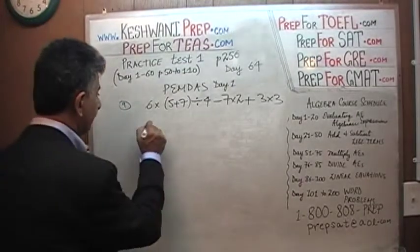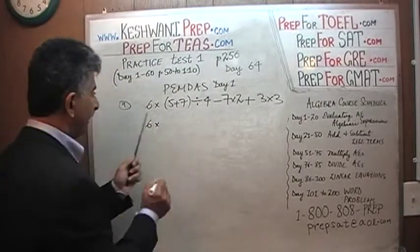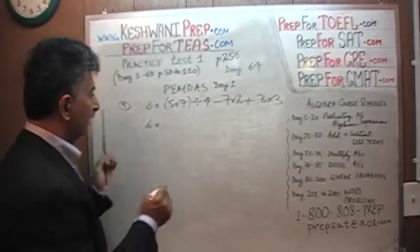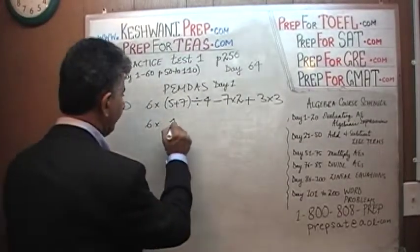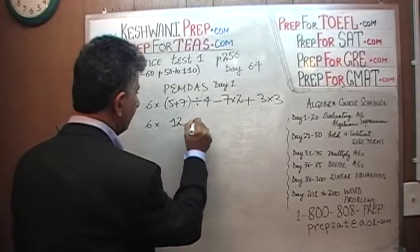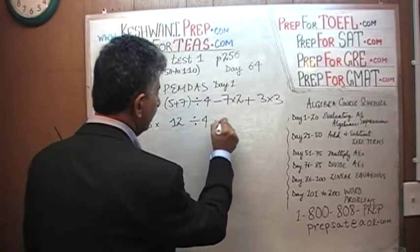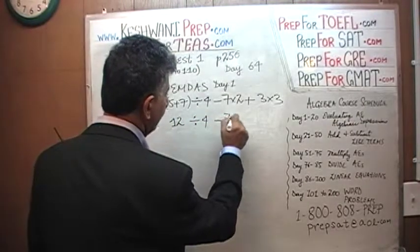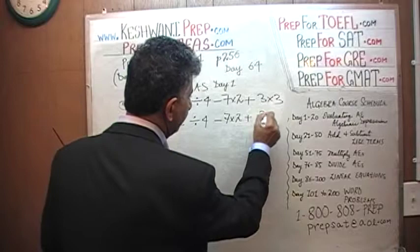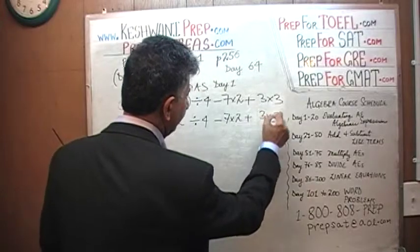We will take care of the parenthesis first. So we have 6 times (5 plus 7), which is 12, divided by 4, and then it goes on: 7 times 2, plus 3 times 3.